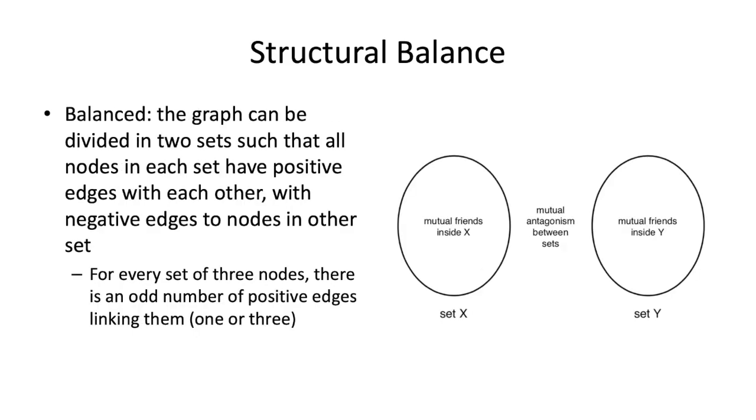So structural balance is the sense that the graph has sort of a group of friends inside one set, a group of friends inside another set, and then there's a mutual antagonism or mutual negative edges between the two sets. That is a balanced network.